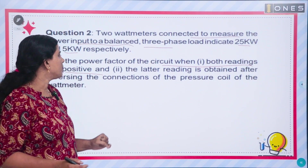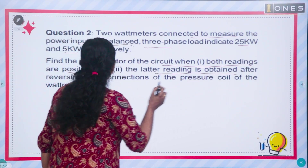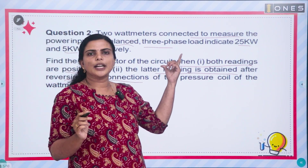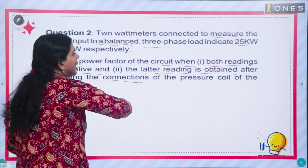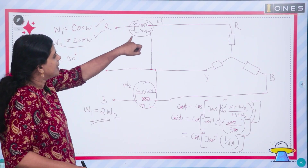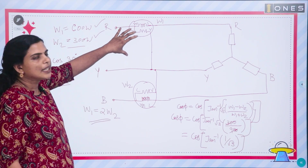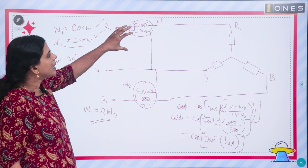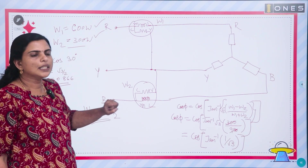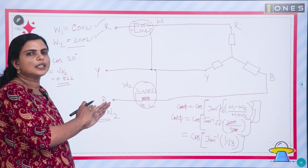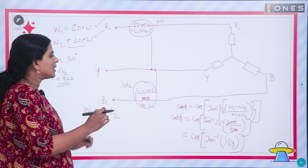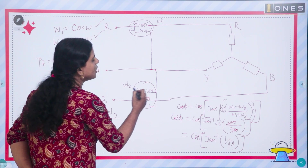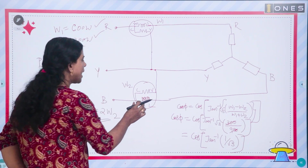When the pressure coil connection is reversed on the wattmeter, the reading becomes negative. To reverse the connection, you interchange either the M and L terminals or the C and V terminals of the wattmeter. This reversal changes the sign of that wattmeter's reading.